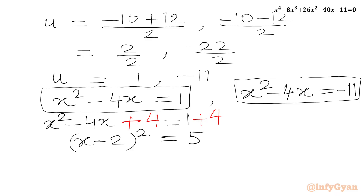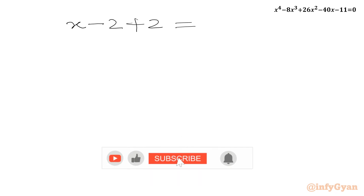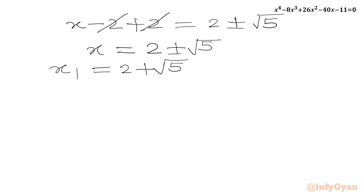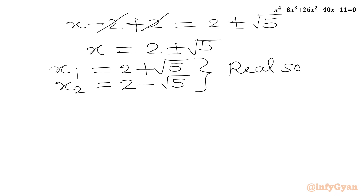Taking the square root of both sides: x - 2 = ±√5. Adding 2 to both sides, we get x = 2 ± √5. So x₁ = 2 + √5 and x₂ = 2 - √5. Both solutions are real valued, so these are our real solutions.